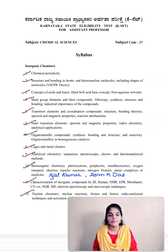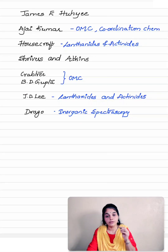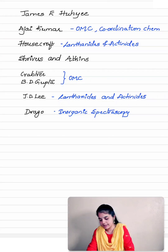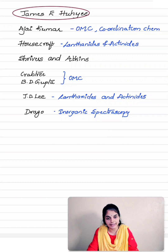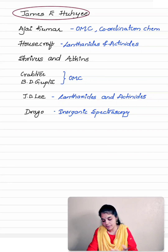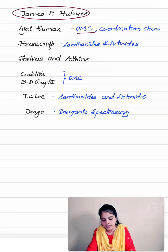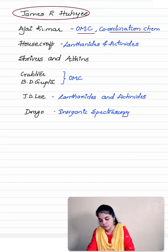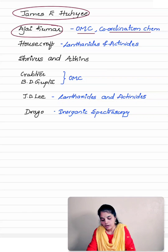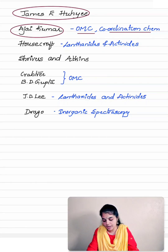For the inorganic chemistry section, you can refer inorganic chemistry by James E. Huheey for most of the syllabus, including coordination chemistry, chemical periodicity, transition elements, and inner transition elements. For organometallic chemistry and coordination chemistry, you can go for Ajay Kumar — organometallic chemistry by Ajay Kumar or coordination chemistry by Ajay Kumar is a good reference book.